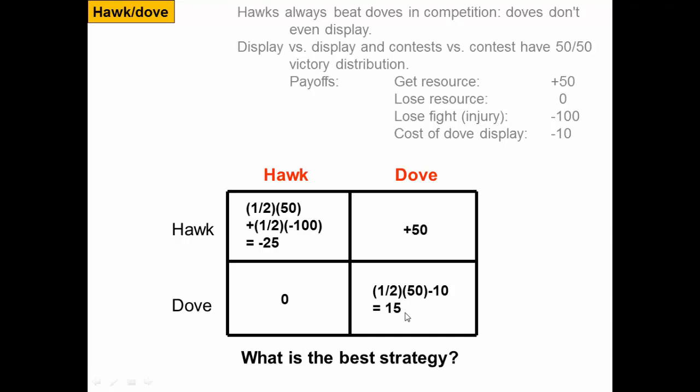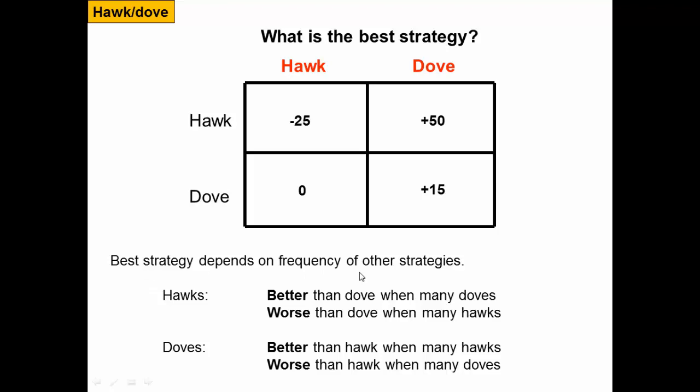So we have this payoff matrix, very similar to the prisoner's dilemma. What is the best strategy? For any individual, if the opponent is a hawk, it's better to be a dove; but if the opponent is a dove, it's better to be a hawk. This is more complex than the prisoner's dilemma because now the optimum strategy depends on what the other individual is doing — there's not always a single optimum strategy regardless of the opponent.